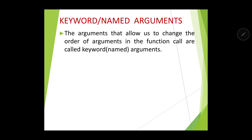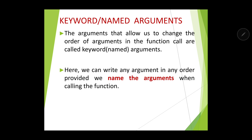Now let us go to the final type, which is keyword or named arguments. The arguments that allow us to change the order of arguments in the function call are called keyword arguments. Till now we have not changed the order of arguments — we used the original order. But keyword arguments allow you to change the order, meaning the position also. We can write any argument in any order, provided we name the arguments when calling the function. If we name the arguments, they can be provided in any order — there is no problem.